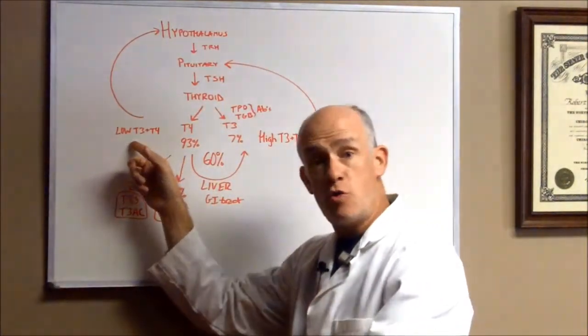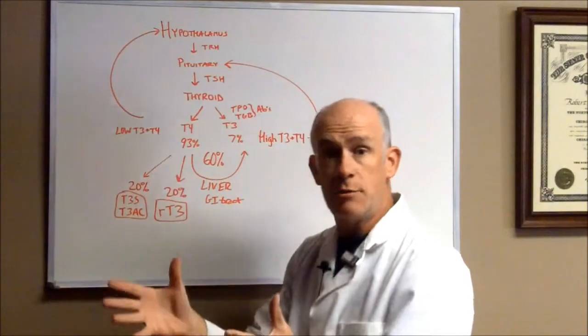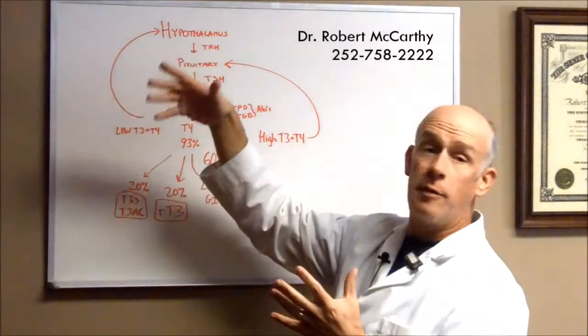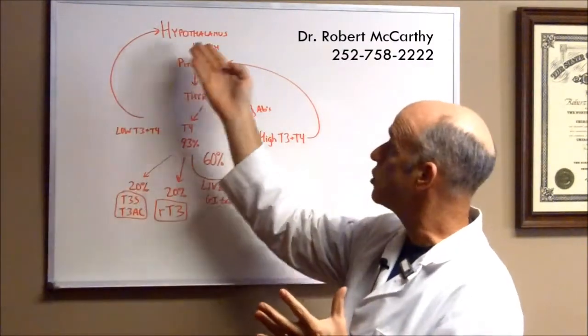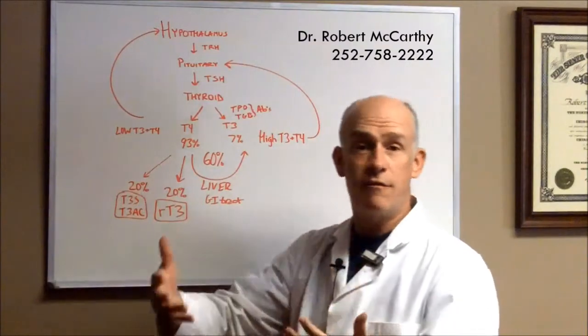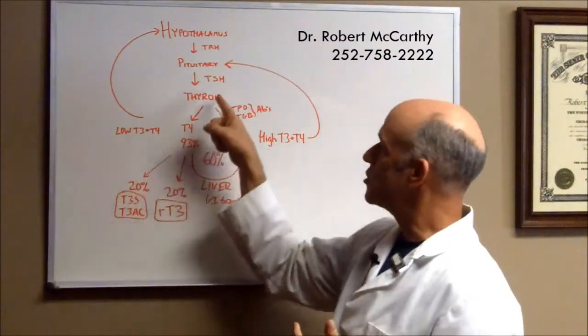Likewise, when there's low T3 and T4 and you need to produce more of this hormone, that's picked up by your hypothalamus, the master gland, and the hypothalamus will start to release more TRH, making the pituitary release TSH, making the thyroid release T4 and T3.